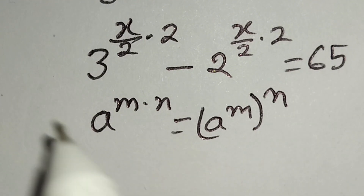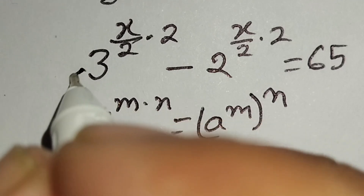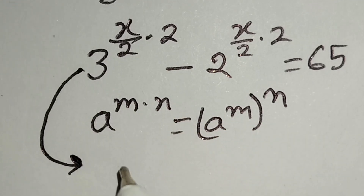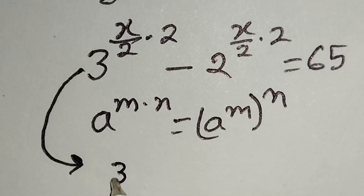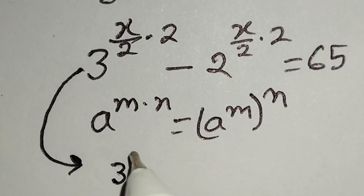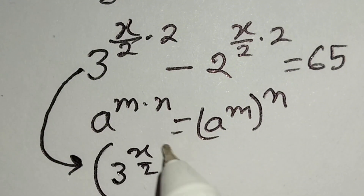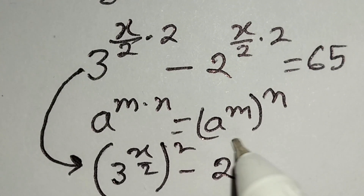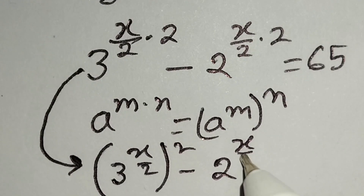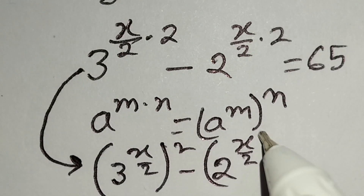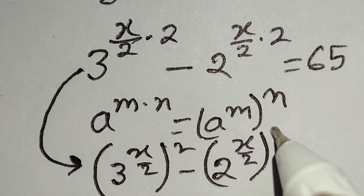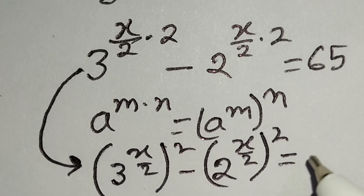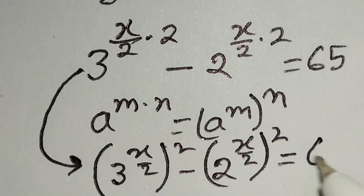According to this identity, we can write this line as 3 to the power (x/2), whole square, minus 2 to the power (x/2), whole square, is equal to 65.